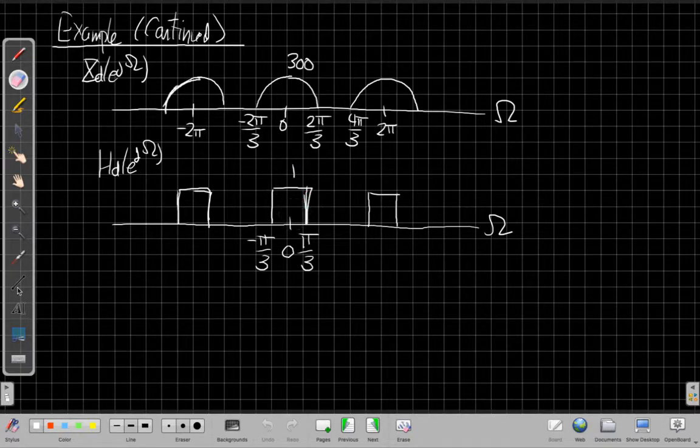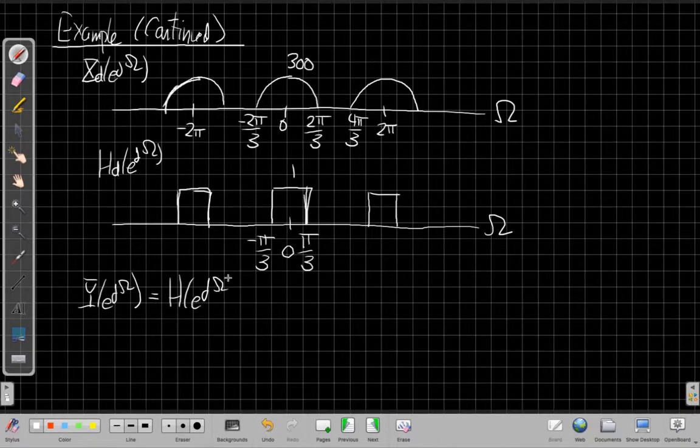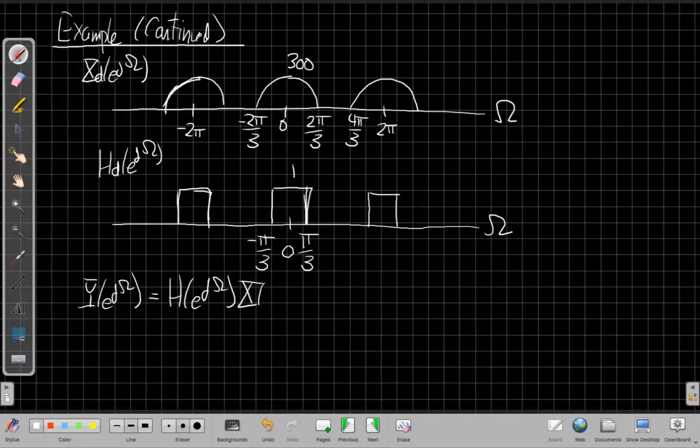Well, we know at each frequency our filtering relationship in discrete time. We just go through at each frequency, every big omega, and we say it's H at that omega times X at that omega.